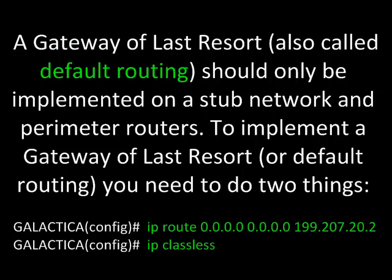To implement a gateway of last resort or default routing, you need to do two things. First, from the router's global configuration command prompt, type the command IP route 0.0.0.0, which means any IP address, and 0.0.0.0 to represent any subnet mask, and then the destination IP that you want to send default traffic to if there are no other static or dynamic entries in the router's routing table. Next, follow it with the command IP classless, which will transmit subnet information and tell the router not to drop packets if it doesn't know which network they should be sent to.